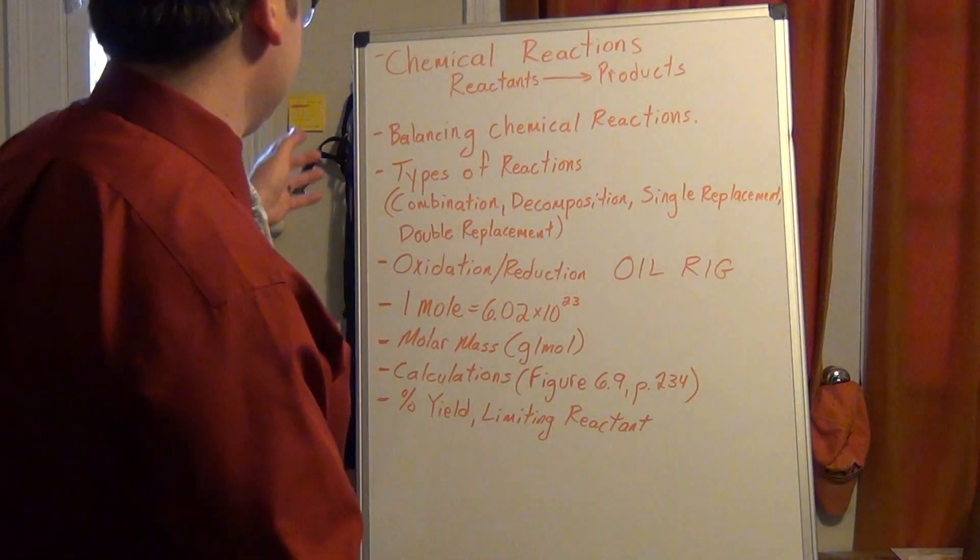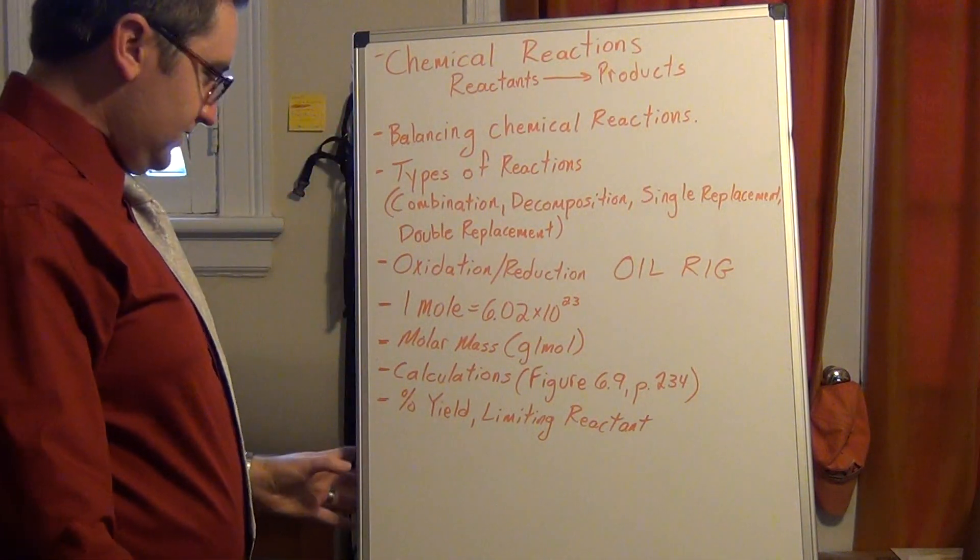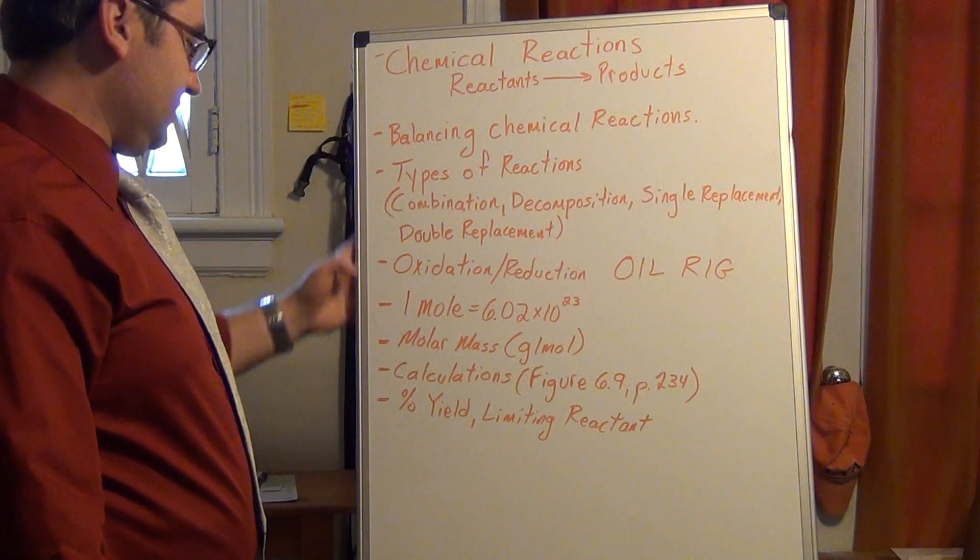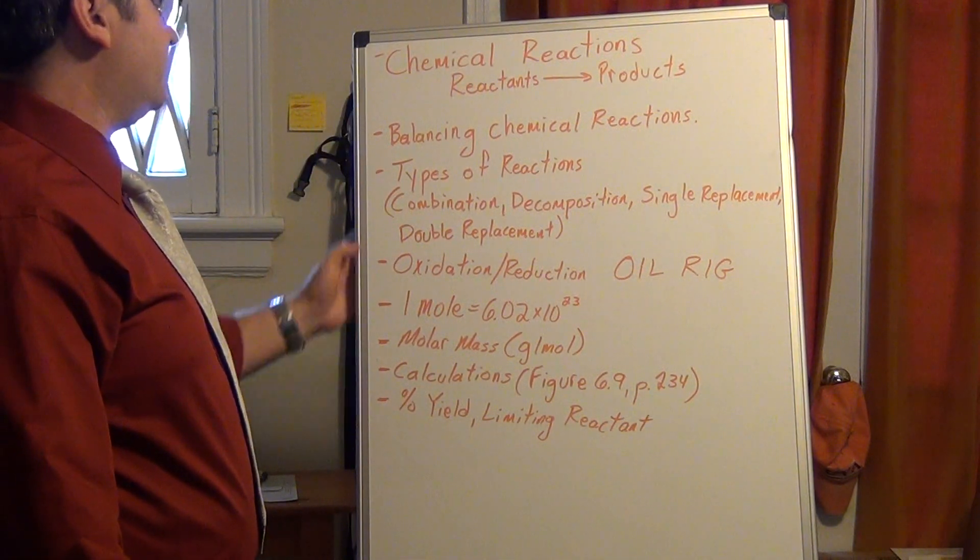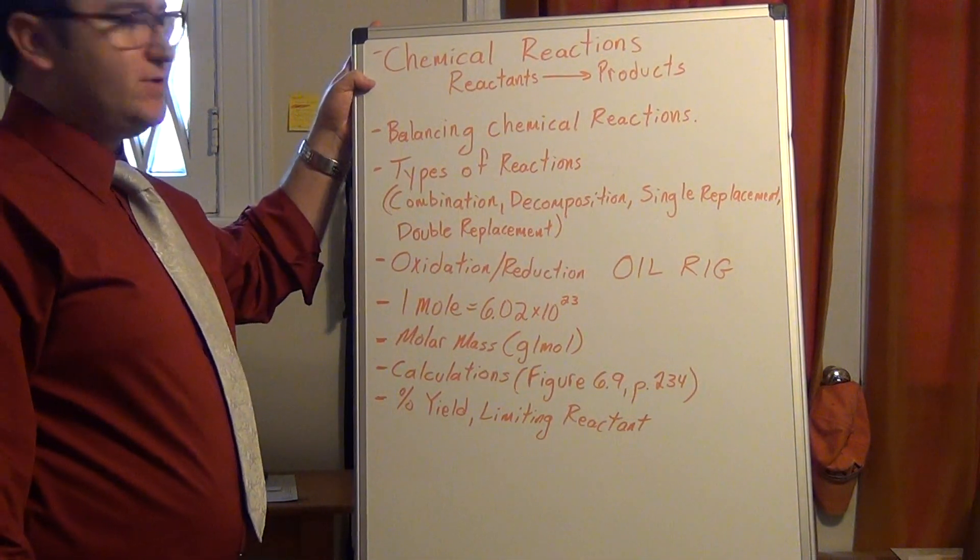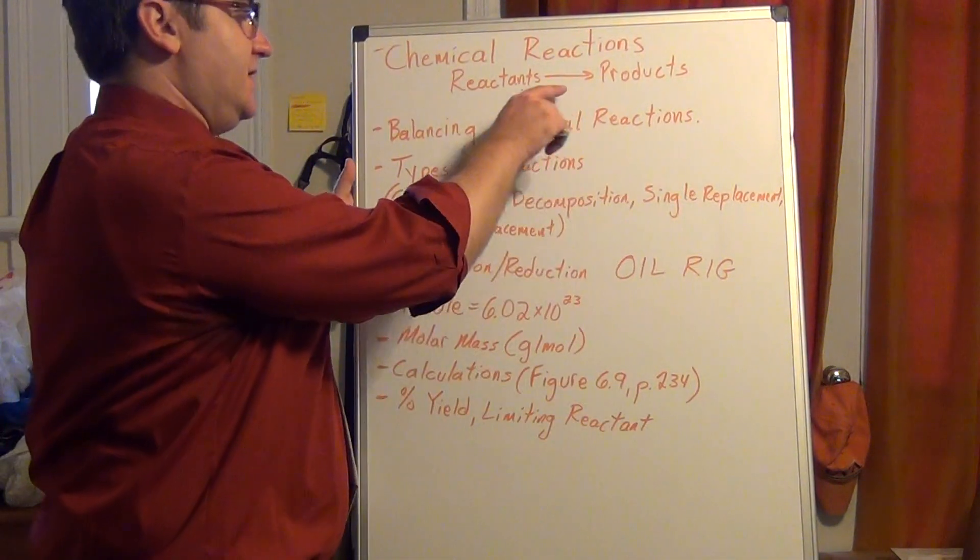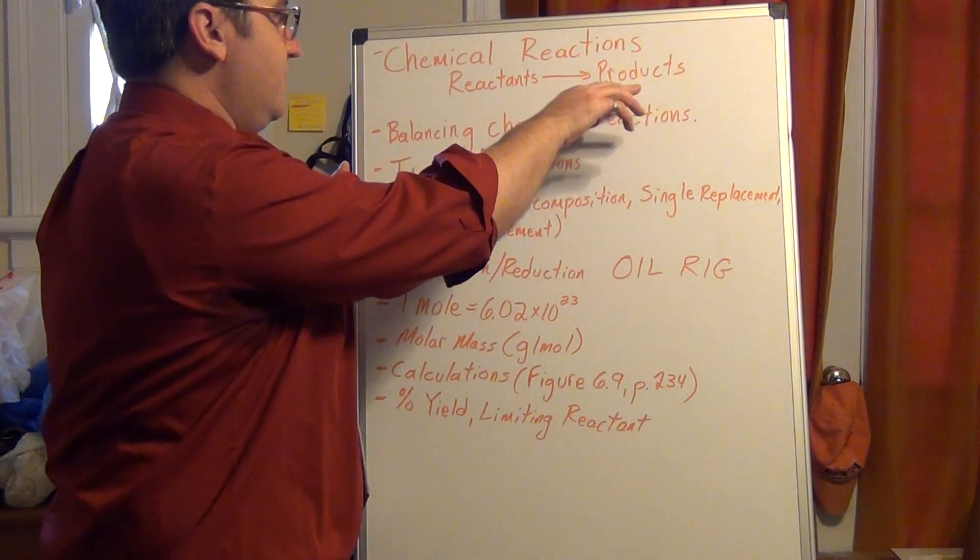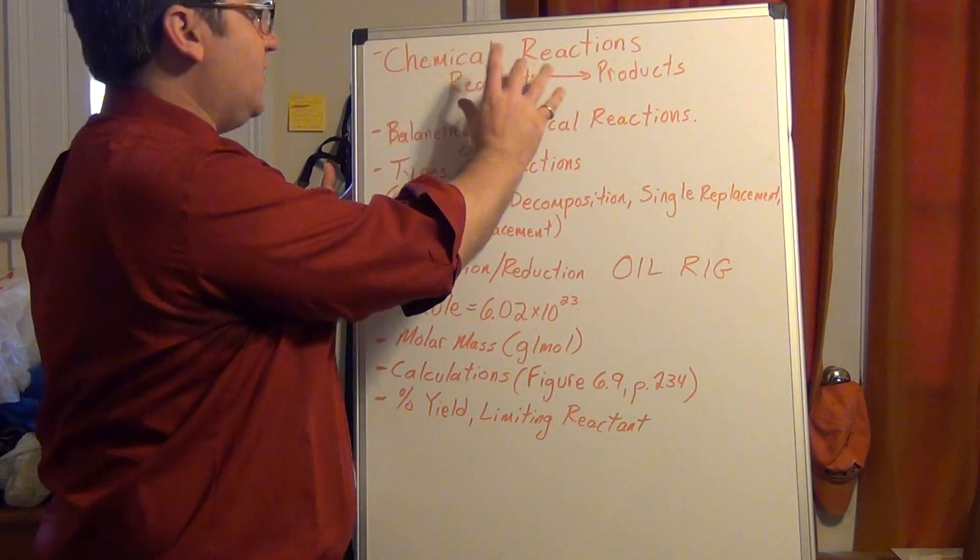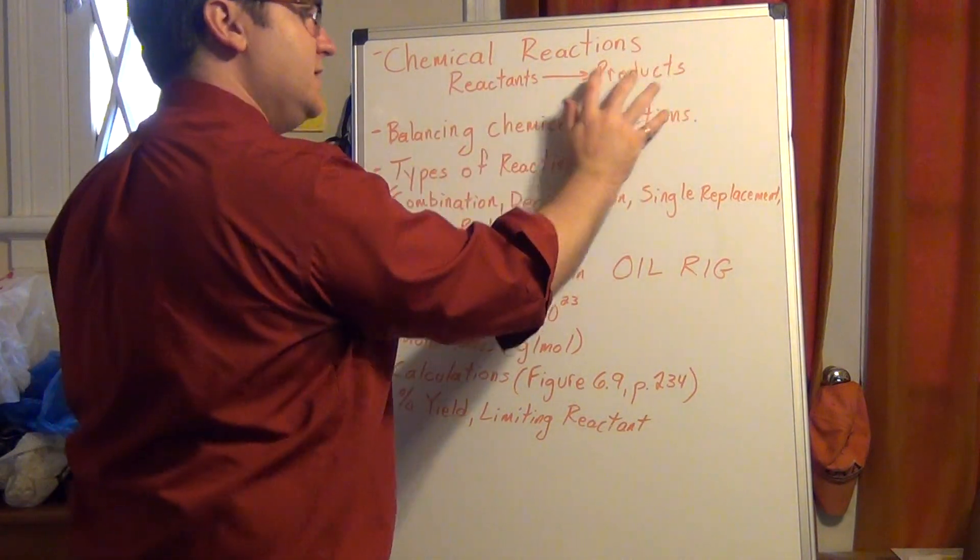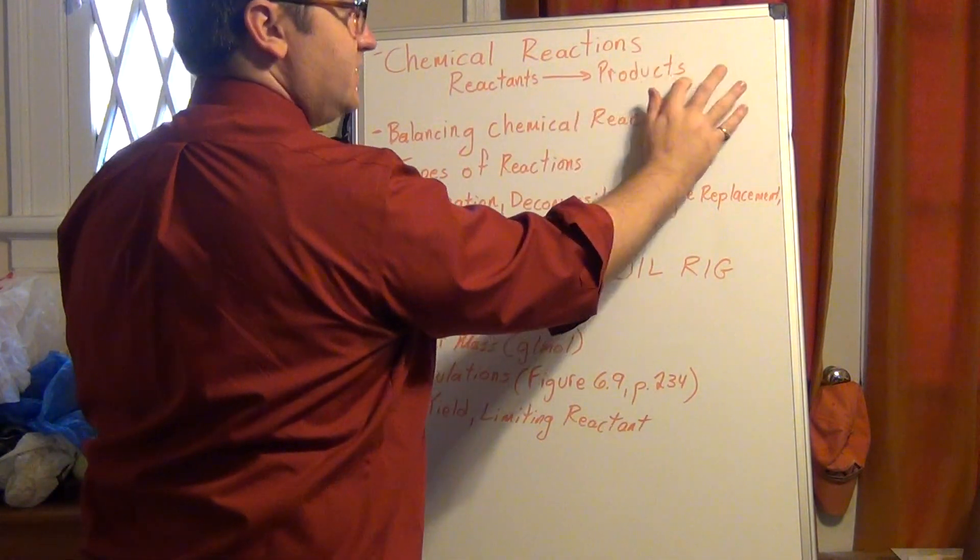Okay, welcome back. Let's finish out the remaining topics for the study guide. In orange here is the material for chapter six. We start off with chemical reactions. Everything in a chemical reaction is separated by an arrow. On the left side of your arrow you'll have your reactants, or your parts that you start with.